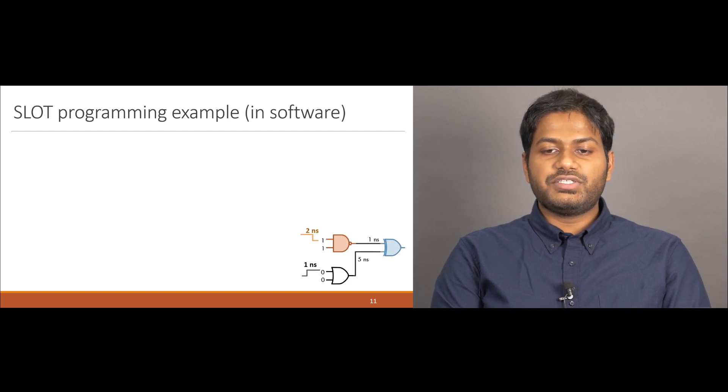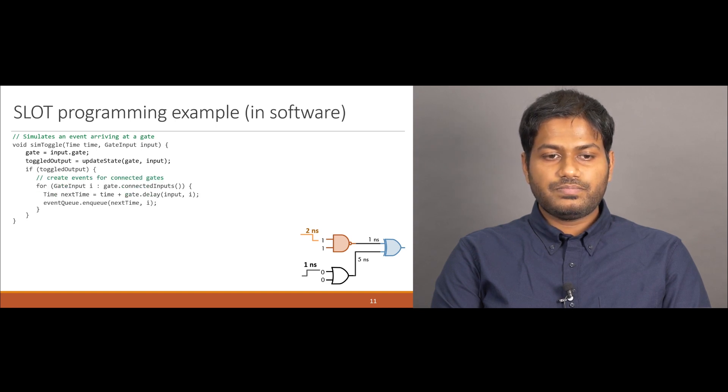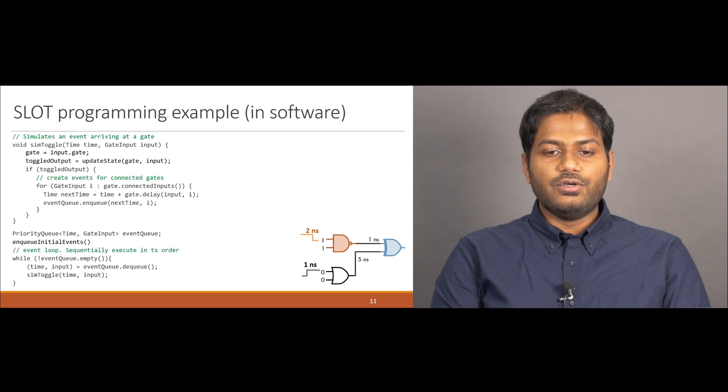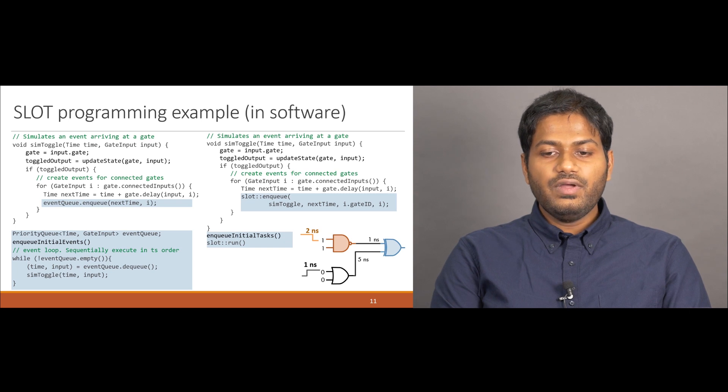We first illustrate the conventional DES implementation and then show the SLOT code. In DES, the sync toggle function simulates an event arriving at a gate. This function updates the gate's own state, and if the gate's output was toggled, it creates new events for downstream gates. These events are held in a priority queue, which is initialized with the initial events, and an event loop sequentially executes these events in timestamp order. In SLOT, the code is very similar, but with two changes. First, the enqueues to the event queue are now replaced with the SLOT.enqueue function. Second, the priority queue and the manual event loop is now encapsulated in the SLOT execution model, hence requiring only a single SLOT.run function to invoke it.